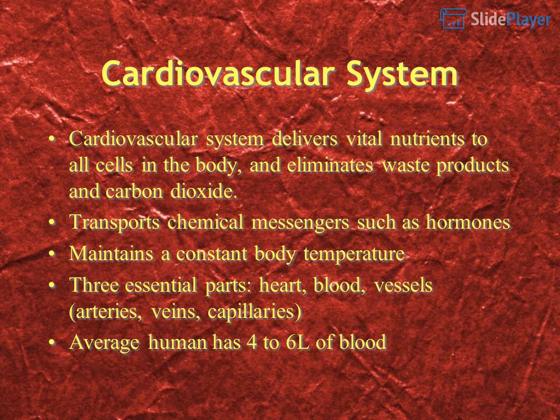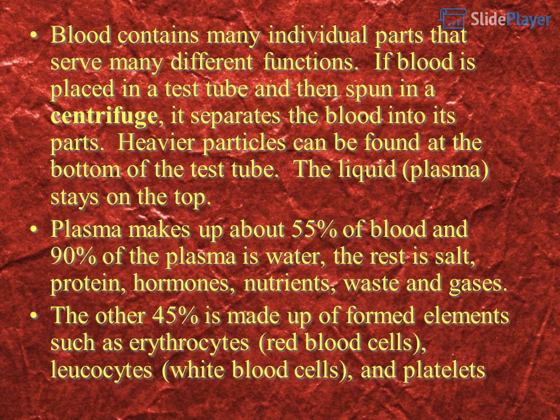The average human has 4 to 6 liters of blood. Blood contains many individual parts that serve many different functions. If blood is placed in a test tube and spun in a centrifuge, it separates the blood into its parts.